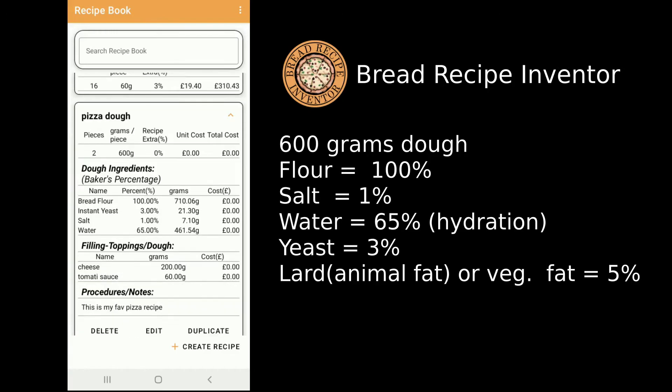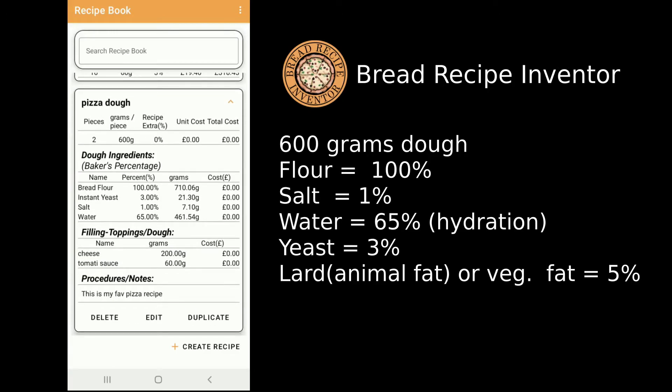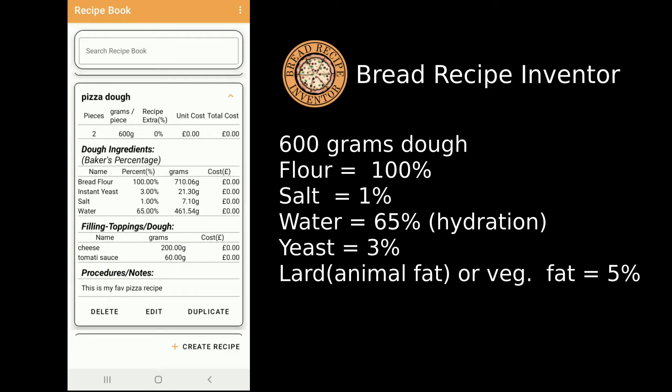Click Save, go to the pizza dough again, and you can see there are already two pieces at 600 grams each. The dough ingredients have already increased by two — the bread flour is now 710 grams — and you can also see the cheese and tomato sauce have been doubled.